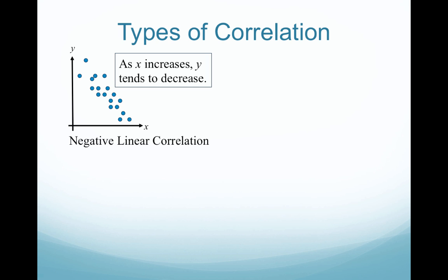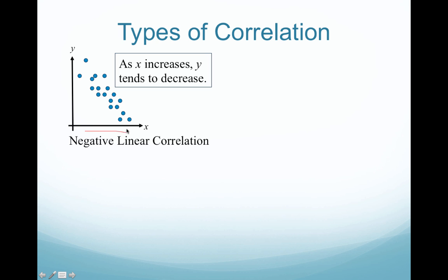There are several types of correlation that can exist. One is a negative linear correlation, as we see here in the scatter plot — meaning that as X increases, Y tends to decrease. So as X gets bigger, Y is decreasing. We have a negative linear relationship.